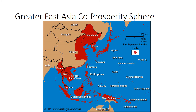They kept expanding over the next couple of years. By the summer of 1942, at the height of the Japanese Empire — after Pearl Harbor — they had control of Southeast Asia and many islands in the Pacific, as you can see on the map. Their justification for doing this was the creation of what they called the 'Greater East Asia Co-Prosperity Sphere,' which is obviously a very euphemistic description of what they were doing.